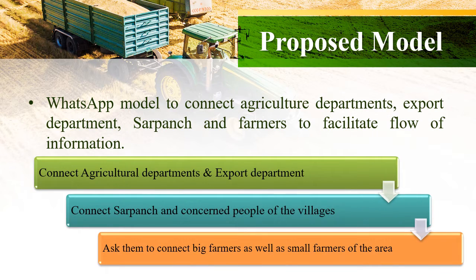The basic idea behind the proposed framework is to interlink different nodes to minimize the information gap between them. Based on discussions with different stakeholders for a feasible solution, a WhatsApp model is proposed to channelize the flow of information. The proposed model is designed to connect the agriculture department, export department, Sarpanch, influential village people, and farmers, in order to facilitate two-way flow of information.